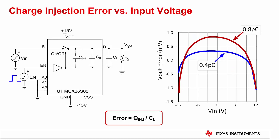This slide explains how charge injection for a given multiplexer can affect output voltage. Assume two multiplexers with charge injection as the only differentiating factor: one with 0.4 picocoulombs and the other with 0.8 picocoulombs, each with an output load capacitance of 10 nanofarads. When the switch is turned on or off, the parasitic drain-to-gate capacitor pumps charge into or out of the output load capacitor. The output voltage error equals Q_inj divided by CL. Note that the amount of charge injected also varies with input voltage, so this effect is nonlinear in nature.